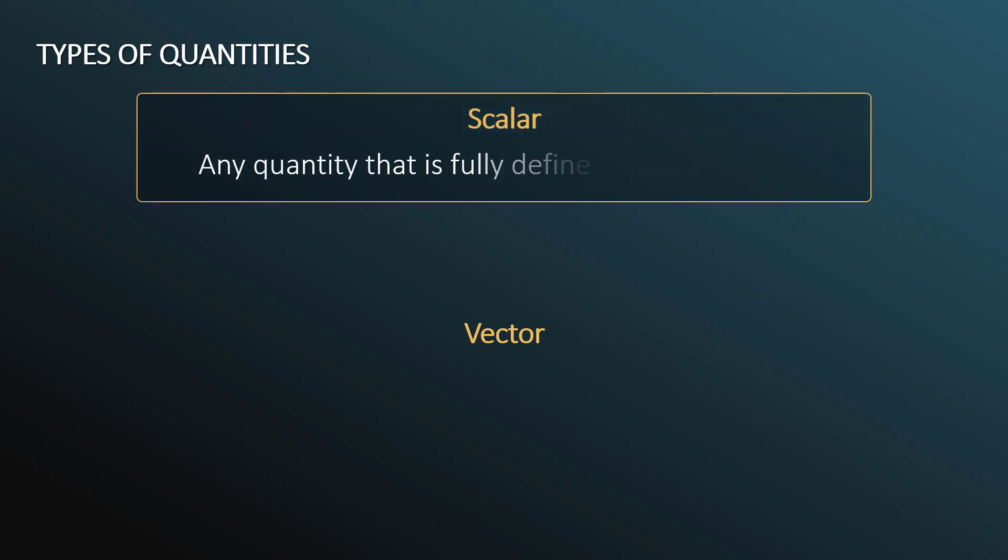A scalar quantity is any quantity that is fully defined by only a value. Examples are mass, temperature, speed, and volume.